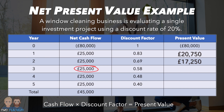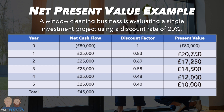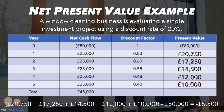In year three, £25,000 is multiplied by 0.58, resulting in a present value of £14,500, and in year five, £25,000 is multiplied by 0.40, resulting in a present value of £10,000. Now that we have calculated the present values of the yearly returns, we just need to calculate the net present value of the investment by subtracting the initial investment from the sum of the present values. So that's £20,750 + £17,250 + £14,500 + £12,000 + £10,000 − £80,000, which equals −£5,500.